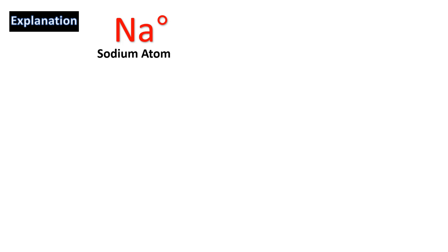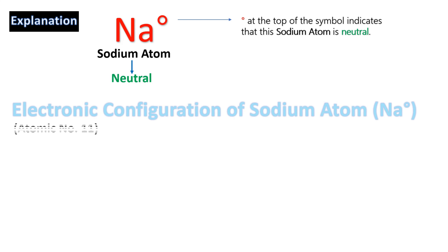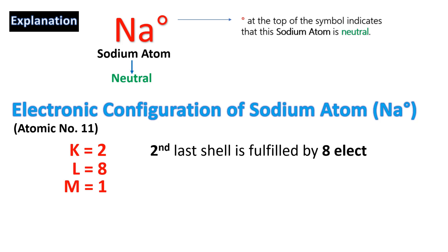We can explain this concept by looking at the redox reaction of sodium chloride. Sodium is a metal; when it carries zero charge it is neutral — the zero indicated at the top of the symbol means the atom is neutral. The electronic configuration of sodium has atomic number 11: its first shell has 2, the second has 8, and the last shell has 1 electron. The second-to-last shell is fulfilled by 8 electrons, and all atoms have a desire to complete their duplet or octet.